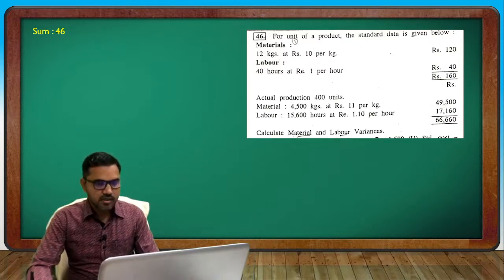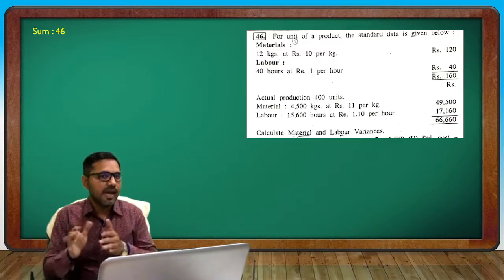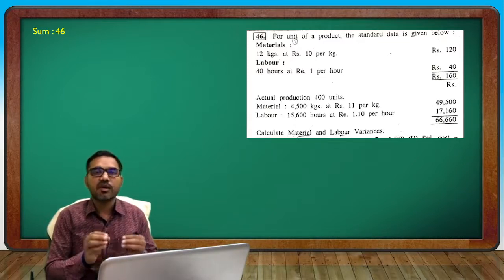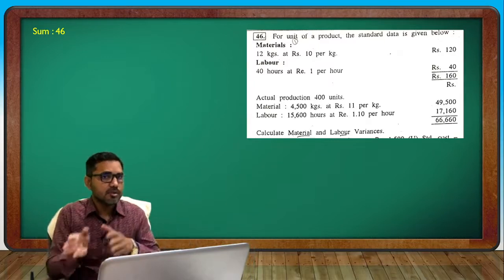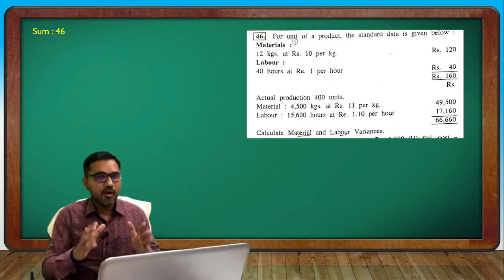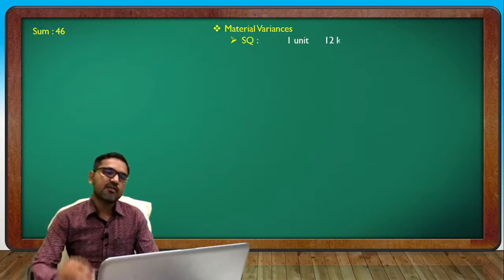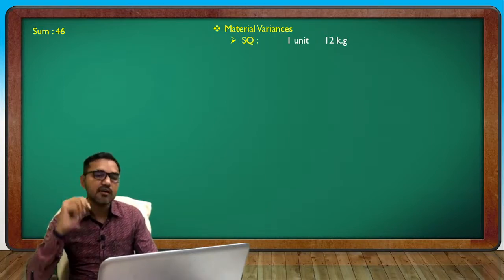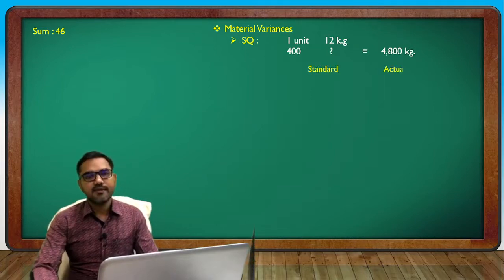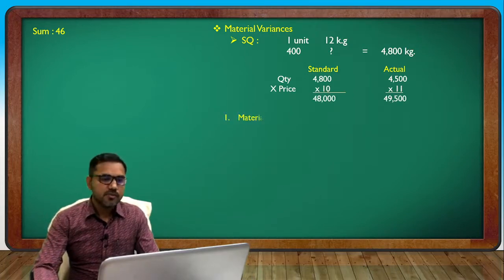Question: calculate material and labor variance. Find the material variance — standard material vs actual material — and the labor cost of production. The output is 400 units. To find material variances: standard cost for 1 unit is 12 kg, so for 400 units: 4,800 kg. Actual: 4,500 kg at 10 and 11 rupees.